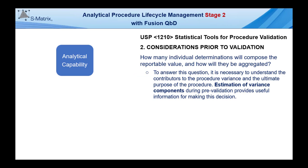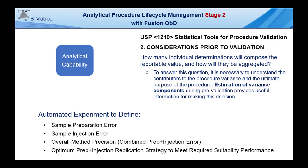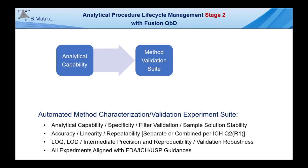Continuing with APLM Stage 2, the analytical capability experiment within Fusion QBD's method validation module enables the user to quickly define the components of variation described in USP 1210, including sample preparation error, sample injection error, overall method precision, the combination of prep plus injection error, and the optimum prep plus injection replication strategy to meet required system suitability performance requirements.